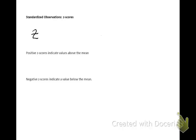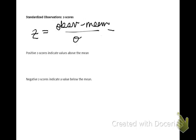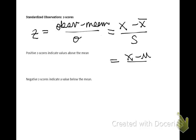We're going to look at z-scores. The symbol for the z-score is z, and the formula is to take an observation, subtract the mean, and then divide by a standard deviation. If you're doing this for a sample, it would be x minus x-bar divided by s. If you're doing this for the population, it would be x minus mu divided by sigma.